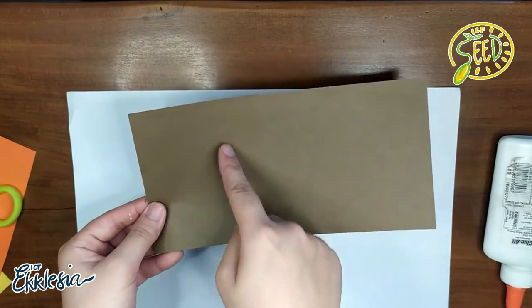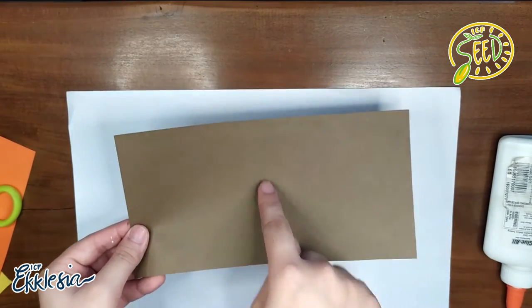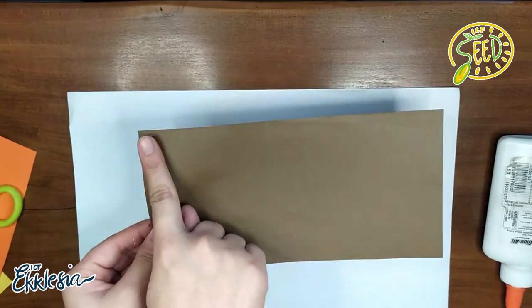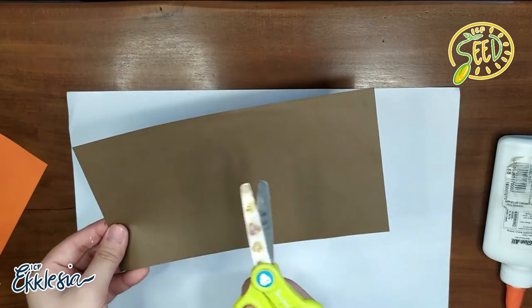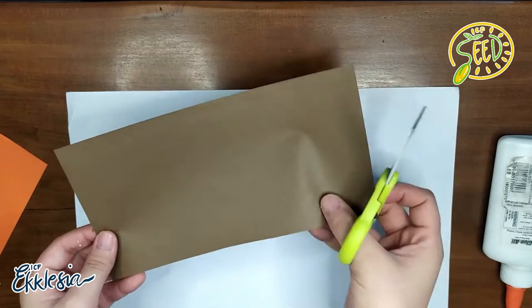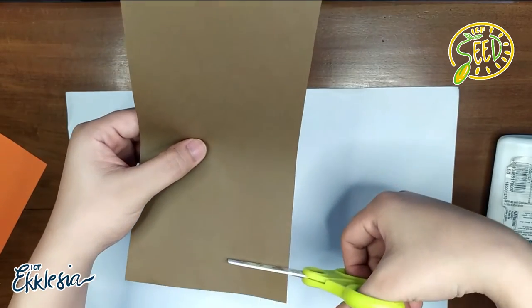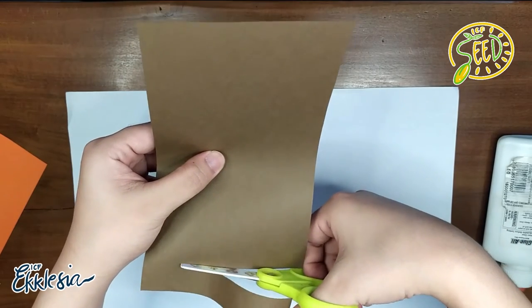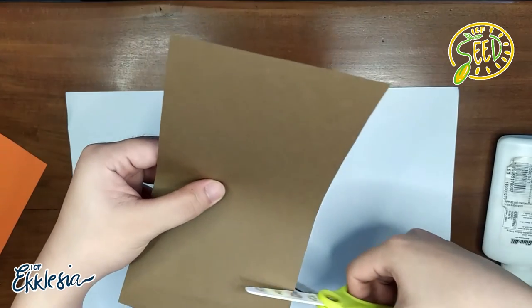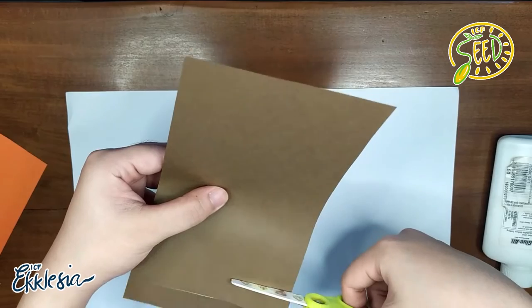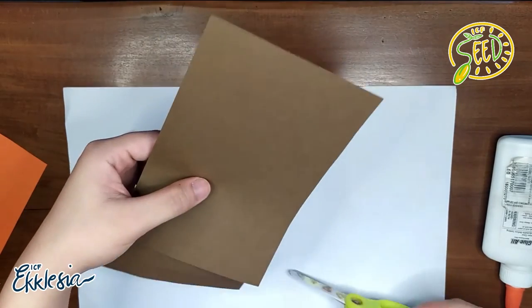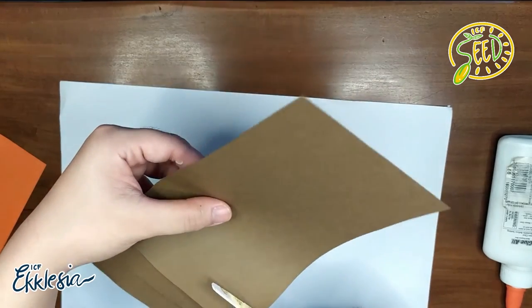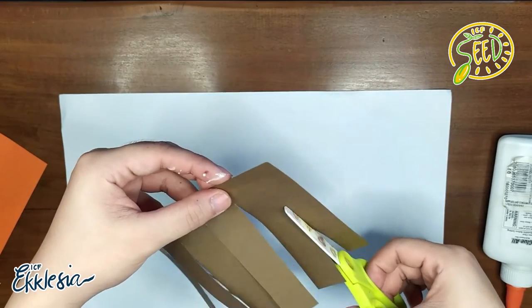At dito sa tinatrace ko ay mag-cut tayo gamit ang scissors ng lines. Pero wag mong isasagad dun sa dulo or dun sa top. Kasi lalagyan natin yun ng glue mamaya. Ayan, i-cut mo lang siya. Tulad nitong ginagawa ko.